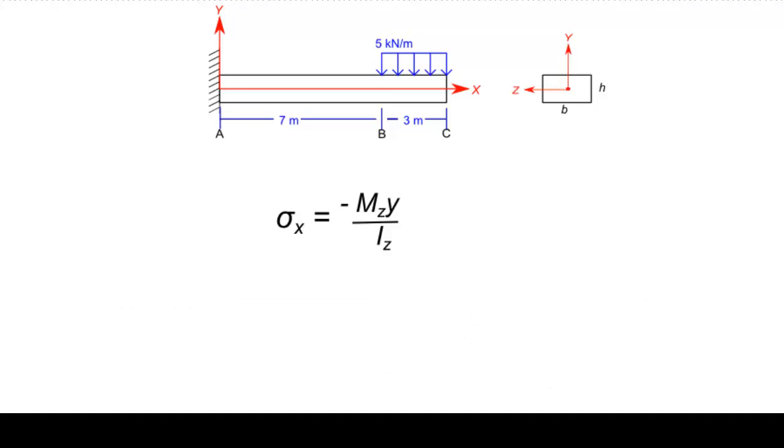The value of the maximum stress at the surface can be calculated by plugging in ± h/2 for the value of y. Furthermore, the moment of inertia about the z-axis is I_z = (1/12)bh³. Once these values are inserted into the flexure formula, we can simplify to see that the maximum stress at the top and bottom surfaces is ± 6M_z/(bh²).